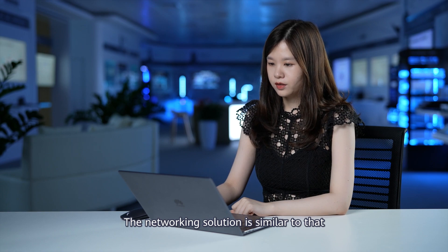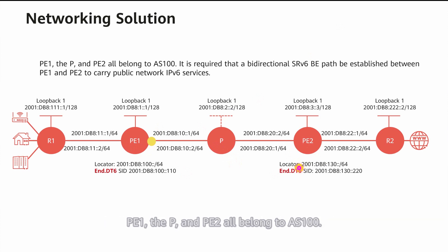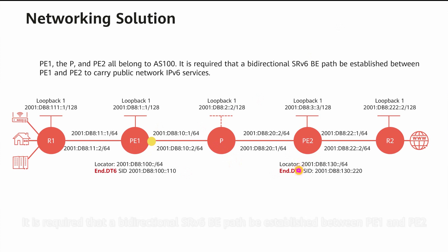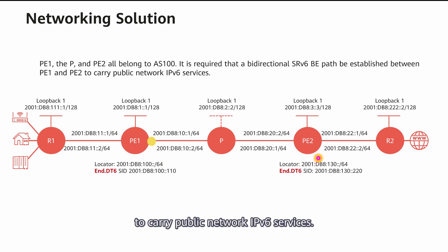The networking solution is similar to that in the public network IPv4 over SRV6 BE scenario. PE1, the P, and PE2 all belong to AS100. It is required that a bidirectional SRV6 BE path be established between PE1 and PE2 to carry public network IPv6 services.